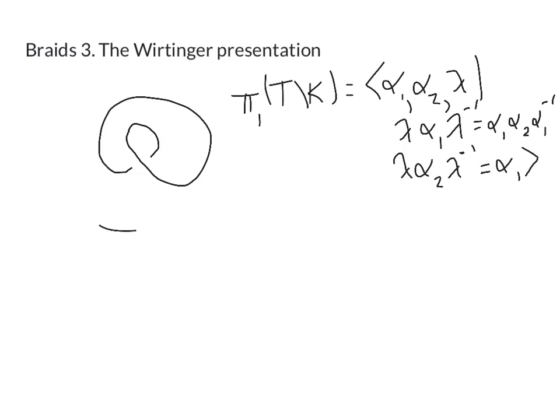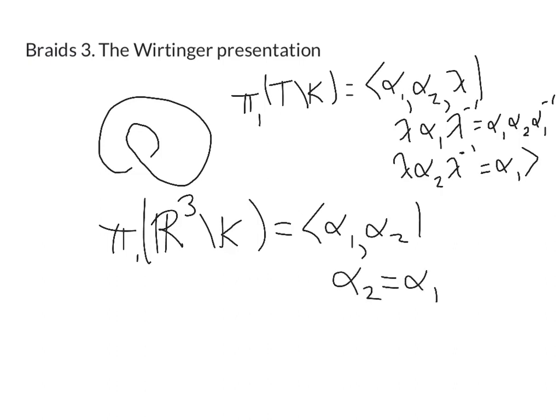And to obtain π₁ of R³ minus K we just get rid of the generator lambda, set it equal to 1 wherever we see it. So we get two generators α₁ α₂, and the relations are now, well let's look at the second relation first. This says α₂ equals α₁. So we actually only need one generator and the first relation says α₁ equals α₁ α₂ α₁⁻¹, but that certainly follows if α₂ equals α₁ because this is just saying α₁ is the same as α₁ times α₁ divided by α₁.